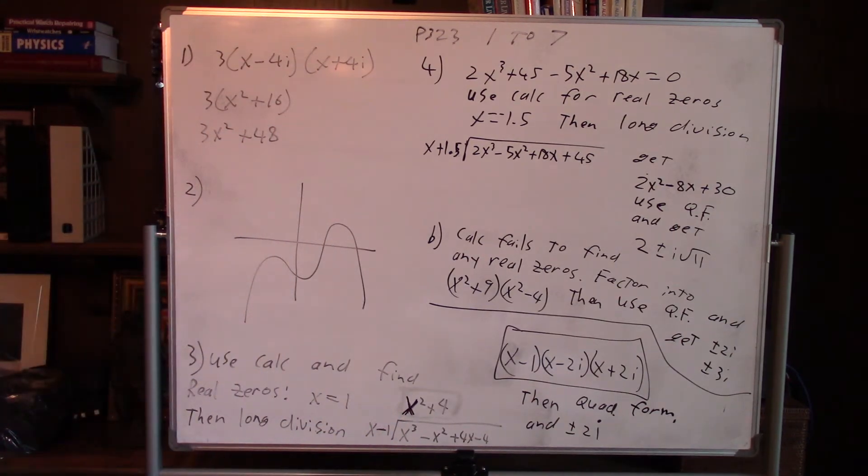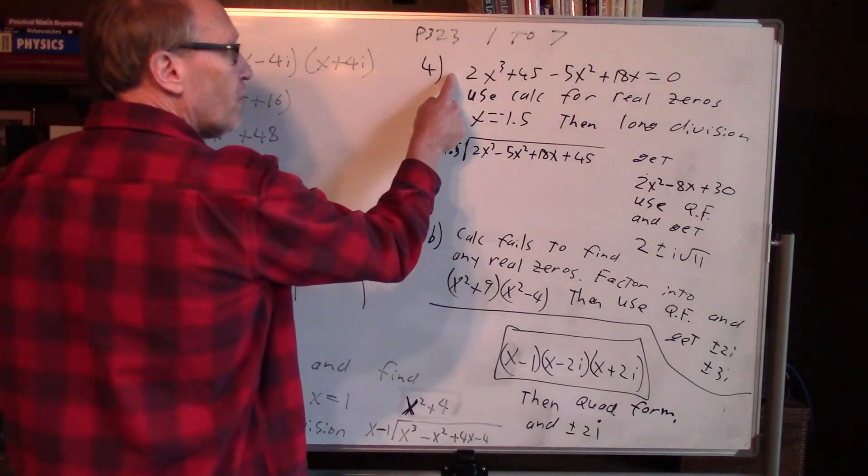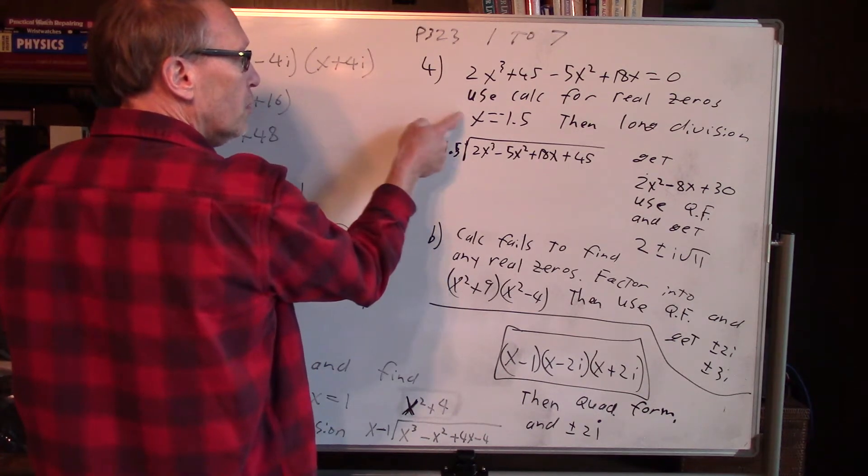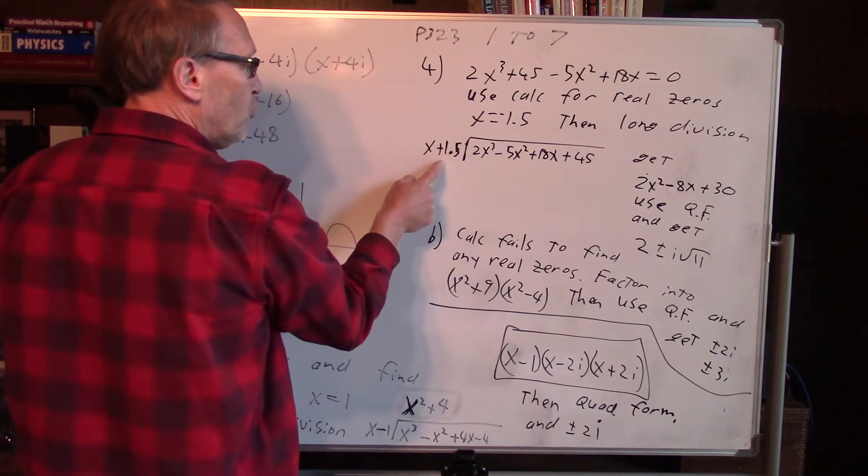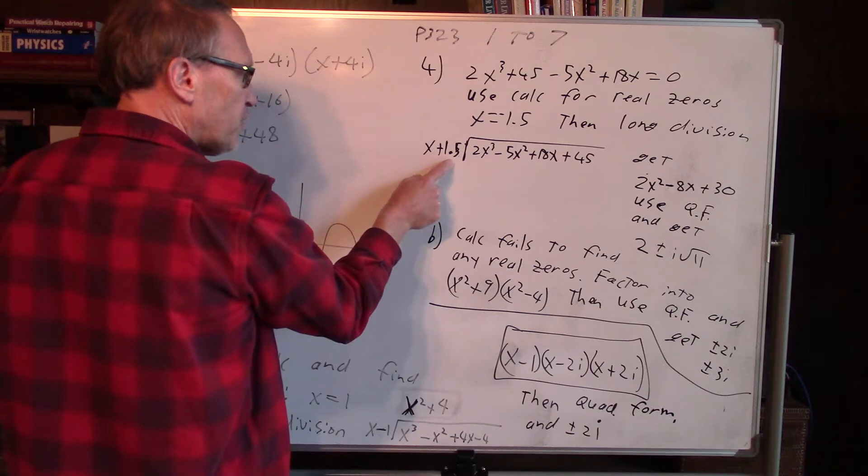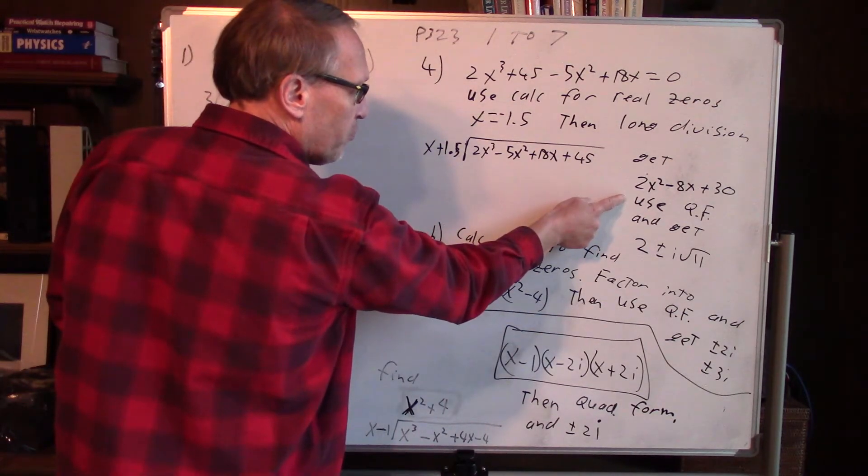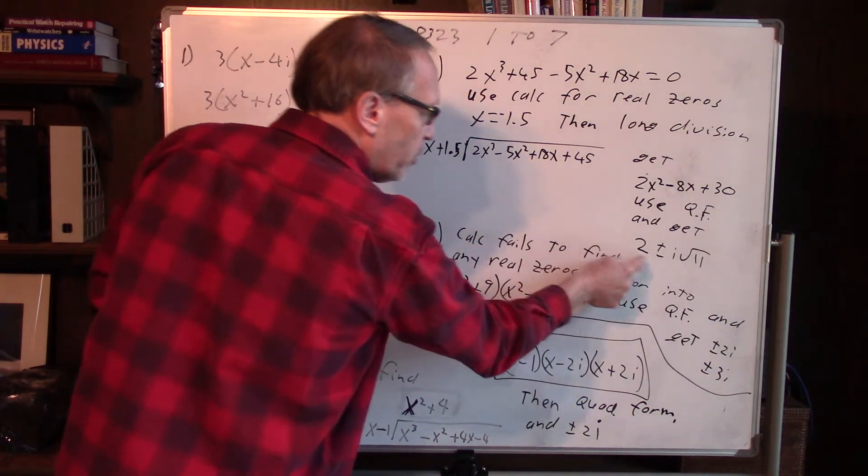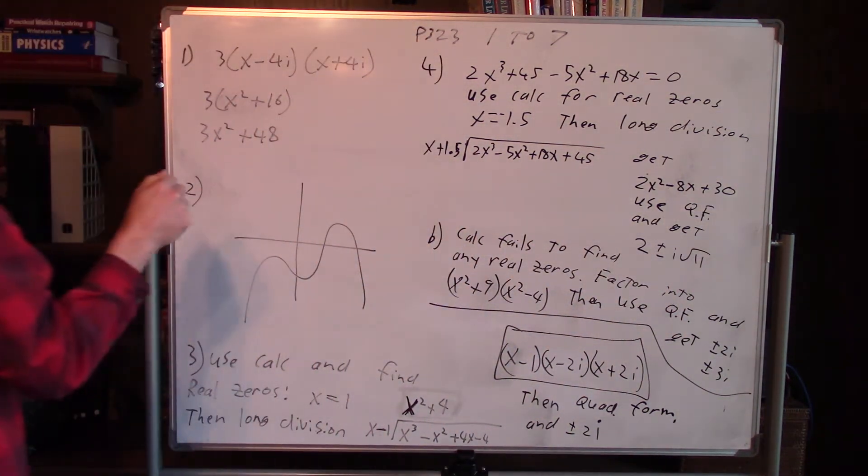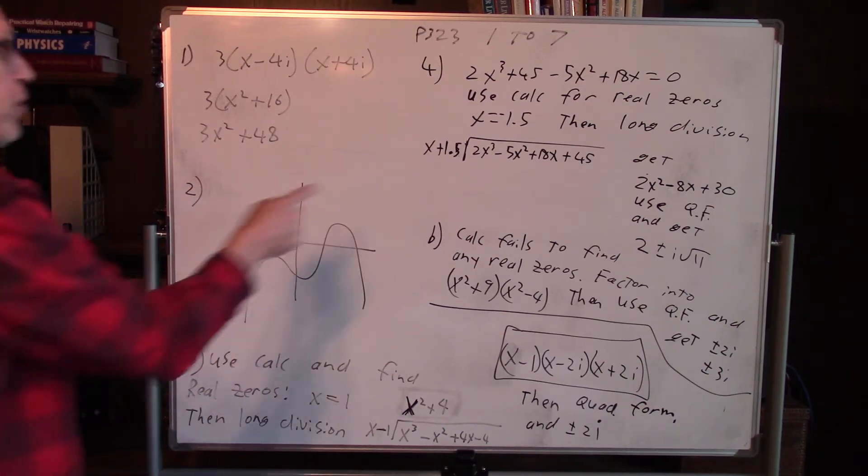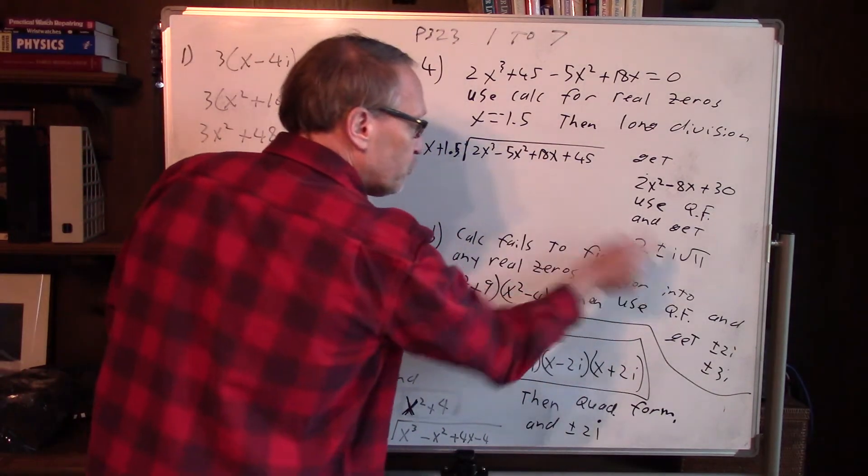Number 4 says solve each equation. So move everything over to the left, set it equal to zero, use the calculator. One zero is found, negative 1.5. Then you do long division of x plus 1.5, you get that quadratic. Use the quadratic formula and you get two more answers. This one didn't say only find the real ones, it said find all solutions for number 4.